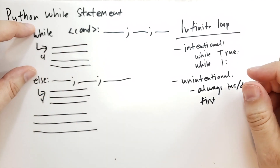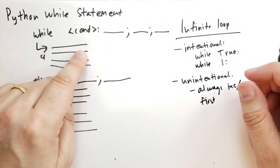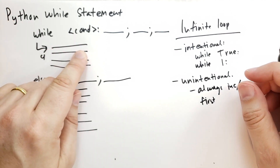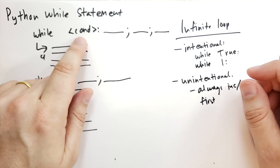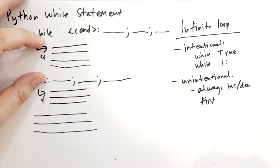My recommendation is always increment or decrement first. Meaning, when you write a while loop, first write the statements that increment or decrement the variables that affect the condition — inside of the while block.